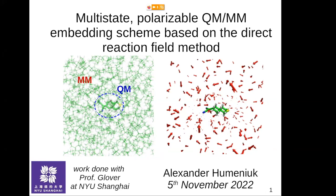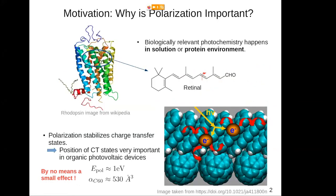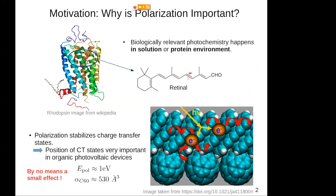Why is polarization important? Basically all biologically relevant photochemistry happens in solution or in some protein environment. Here is the retinal molecule that is responsible for vision. The QM photoactive part is very small, but the environment can have an important impact on the dynamics. Polarization is particularly important when charge transfer states are involved.